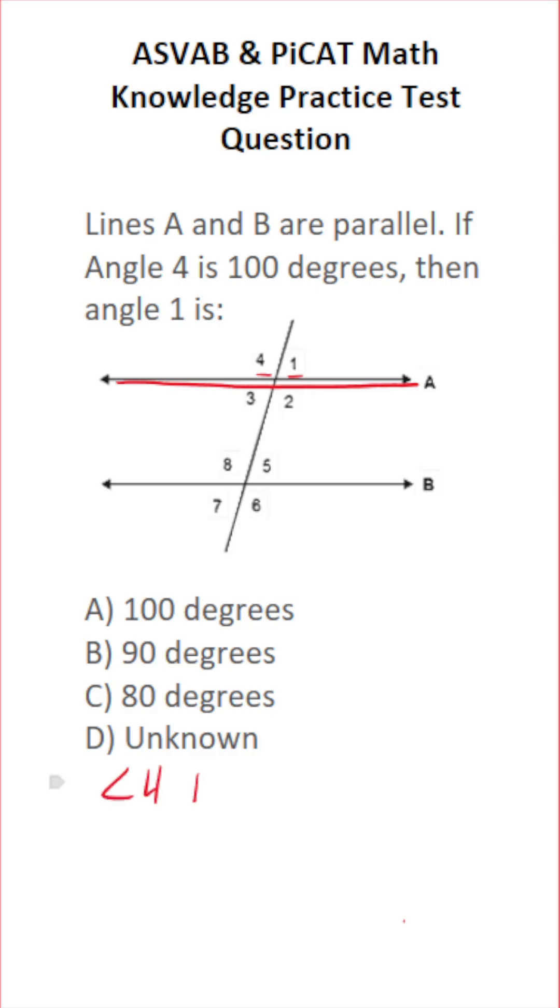So angle 4, in other words, plus angle 1 is going to equal 180 degrees. And we know that angle 4 is 100 degrees. So this says 100 degrees plus angle 1 equals 180 degrees.